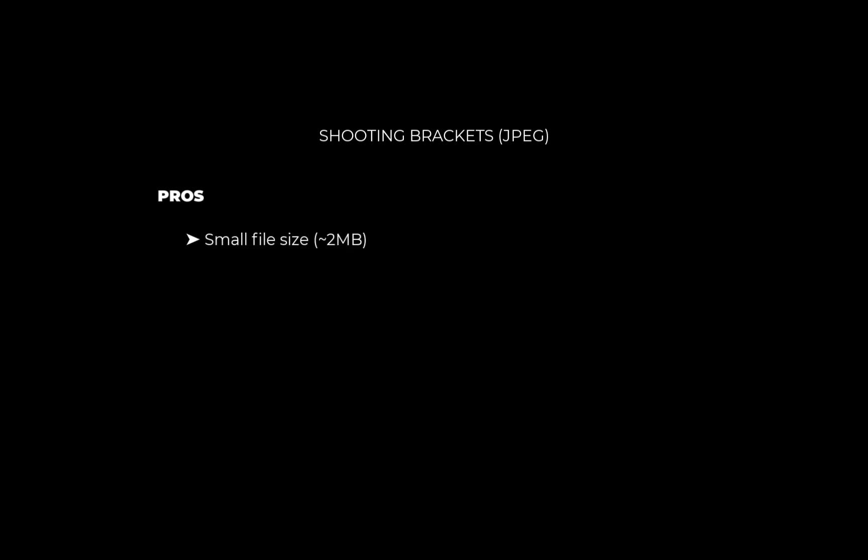Let's start with JPEG brackets. What are the benefits of JPEG? The first benefit is the small file size. iPhone JPEG file size is around 2 megabytes. Shooting a typical three-bracket shot for HDR, you get a total of around 6 megabytes per shot, which is five times less than shooting in RAW. Another benefit of JPEG is that images are processed out of the box with sharpening and tone and color corrections baked in to make for a better looking image.